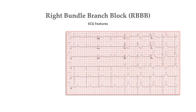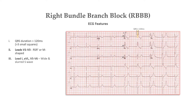Right bundle branch block is said to be present when QRS duration is greater than 120 milliseconds. In leads V1 to V3, there is RSR pattern, or in other words, an M-shaped QRS complex. In lateral leads including lead 1, AVL, V5, and V6, the S-wave is wide and slurred.